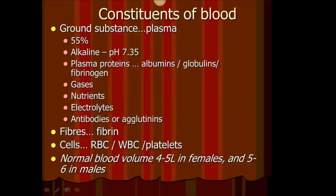Now let's look at some of the constituents of blood. First is ground substance, which is plasma, and it forms the majority of blood — about 55%. Then there are the fibers, fibrin, which you only get to see when blood clots. And then we have cells: red blood cells, white blood cells, and platelets.